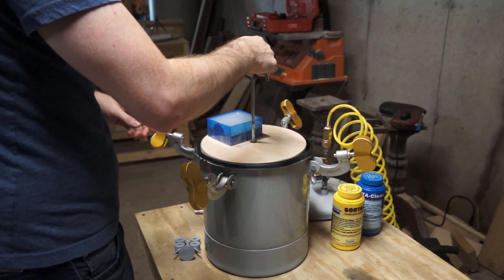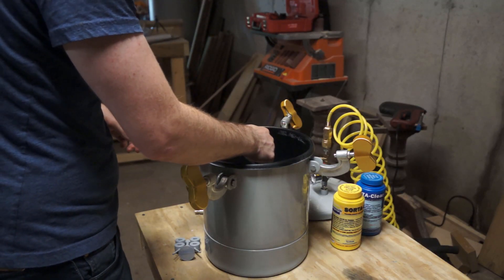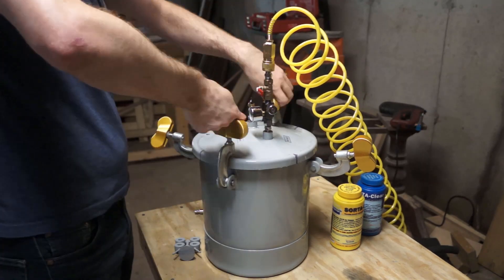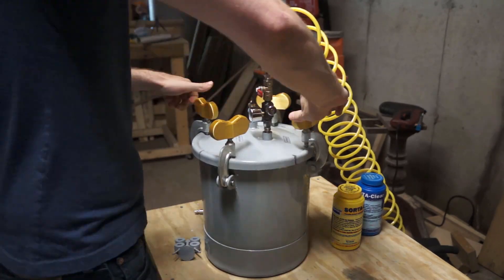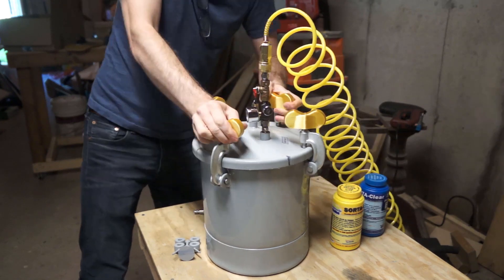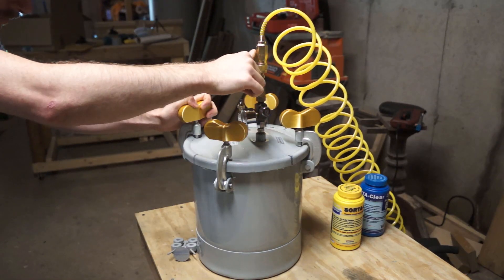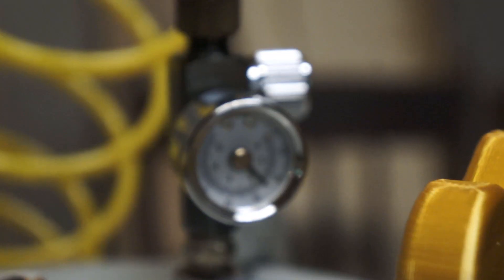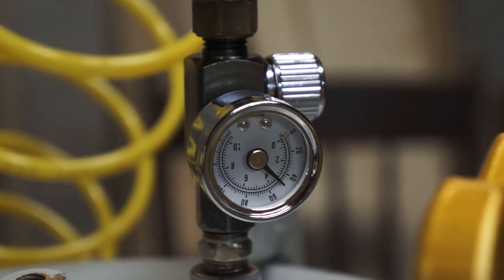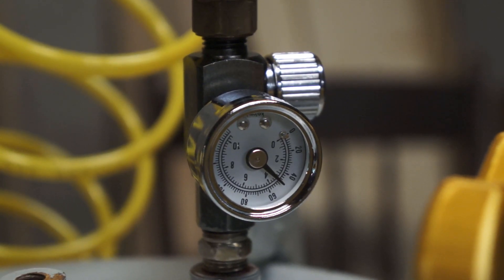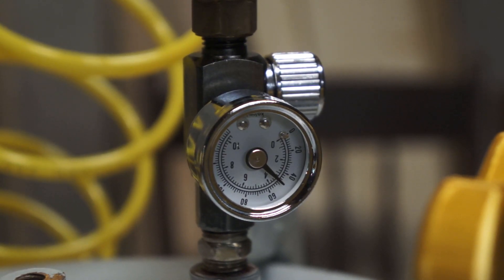Then I moved it into the pressure pot, clamped down the lid, and pressurized the tank. I've been doing my castings at about 45 or 50 psi and that's been working really well for me. Aside from an occasional surface bubble I've been getting really clear castings.